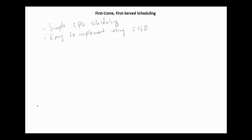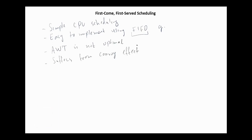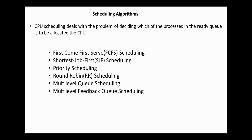To conclude: first-come-first-served scheduling is a simple CPU scheduling algorithm, easy to implement using a first-in-first-out queue. However, the average waiting time is not optimal, it suffers from the convoy effect, and it is not suitable for time-shared operating systems. Our next topic is shortest job first and shortest remaining time first scheduling. That's all for today. Thank you.